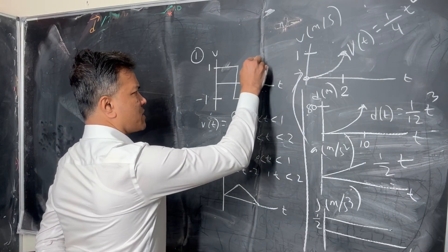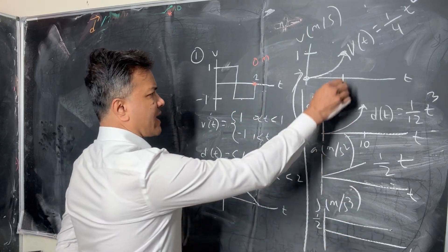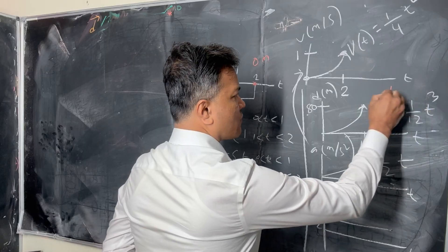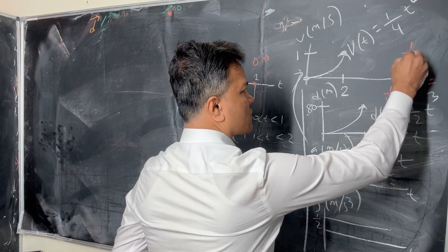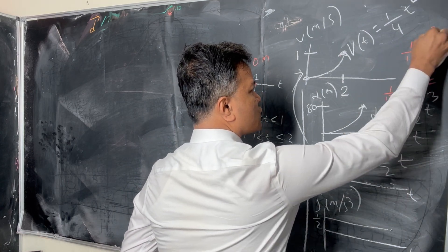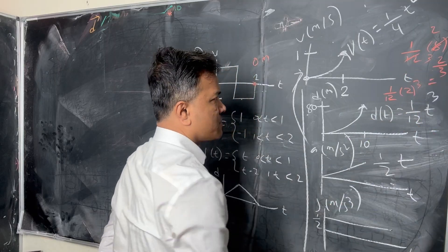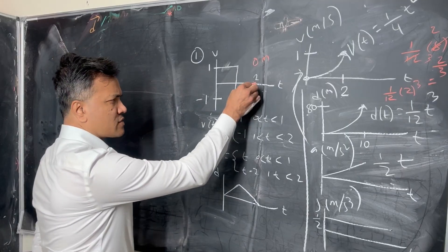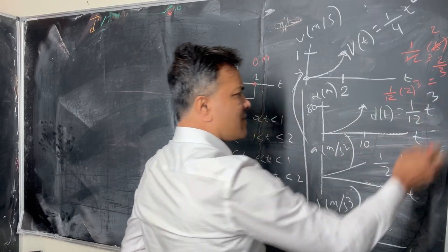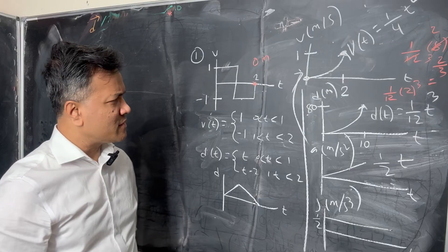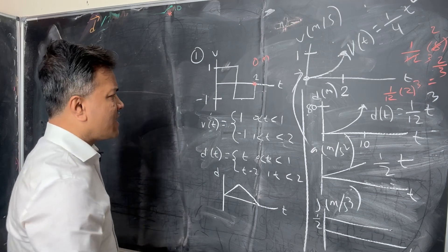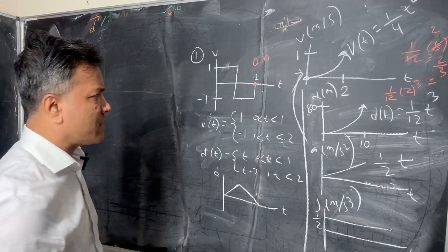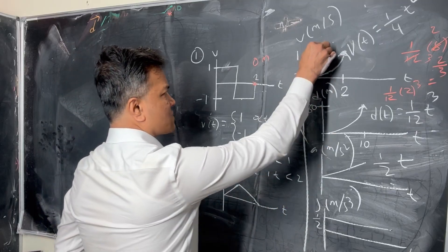At 2 seconds, this one traveled only 0 meters because it's back to the origin. At 2 seconds, this one traveled how much? 1 over 12 times 2 cubed, which is 8, so 1 over 12 times 8, which equals 2 over 3 meters. At 2 seconds, this displacement is 0 and this displacement is 2 over 3. So this one traveled more displacement at the end of 2 seconds. The answer is diagram B.